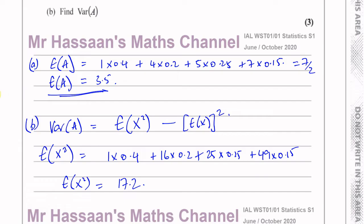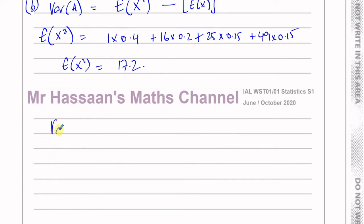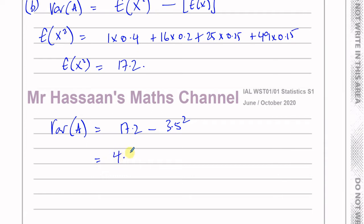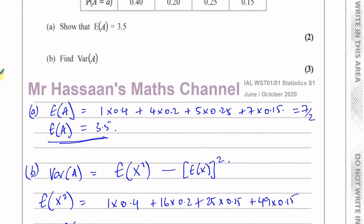So the variance of A is 17.2 minus 3.5 squared — the mean of the squares minus the square of the mean — which gives you 99 over 20, which is 4.95. That's the answer to part B.